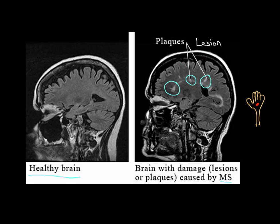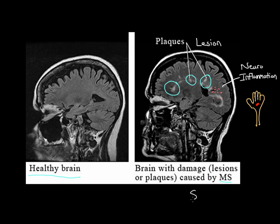What happens is you have all these immune cells that come together and cluster around certain parts of the brain and attack it. When a whole bunch of immune cells come together to attack a certain part of the body, we call this inflammation. Because it's happening in the brain, we call it neuroinflammation. The condition in which you have these lesions in the brain is called sclerosis. In the case of multiple sclerosis, you have multiple lesions — hence why we call it multiple sclerosis.